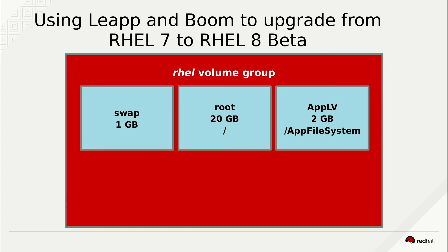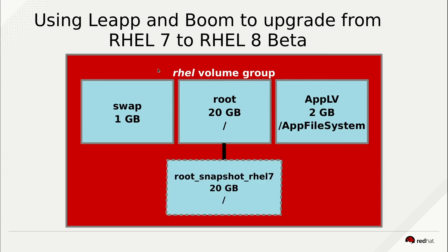On this system I have a RHEL volume group with three logical volumes: swap, root, and app LV. Prior to the RHEL 8 Beta upgrade, we will first create a snapshot of the root logical volume and we will name that root snapshot RHEL 7, and we will use the Boom Boot Manager to make that snapshot bootable.